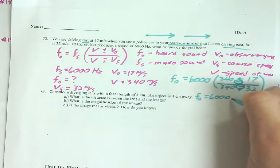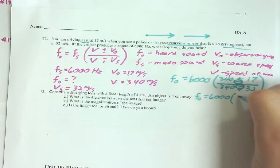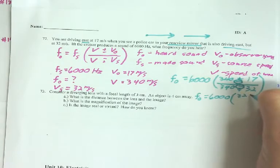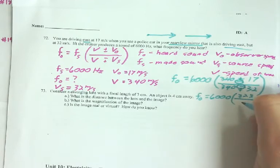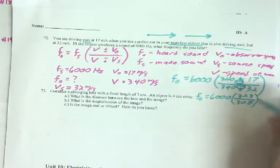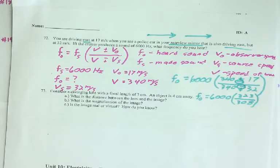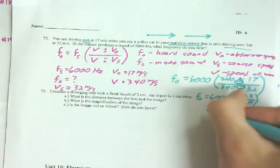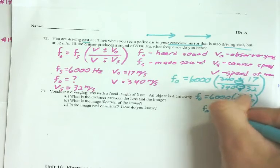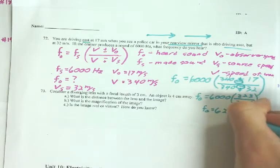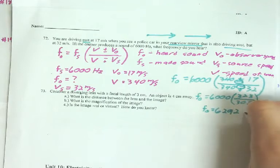6,000. So, 340 minus 17 is 323. 340 minus 32 is 308. Divide those two out. That gives me 1.0487. Multiply that by 6,000. And I get F-O to be 6,292 hertz.